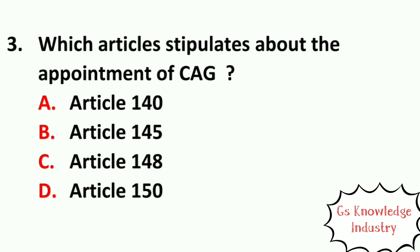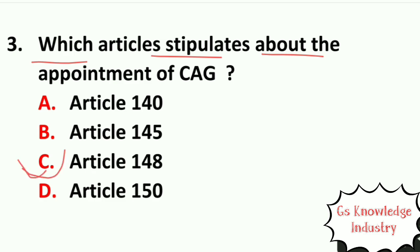Question three: which article stipulates about the appointment of CAG — Comptroller and Auditor General? Option A, Article 140. Option B, Article 145. Option C, Article 148. Option D, Article 150. The right answer is Option C — Article 148.